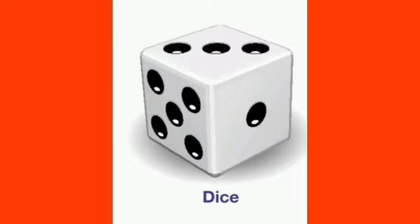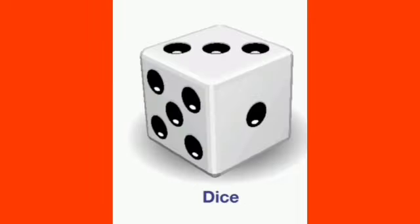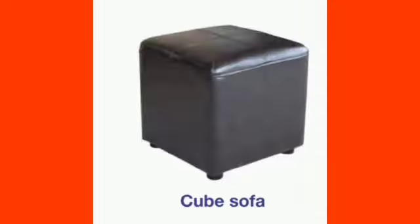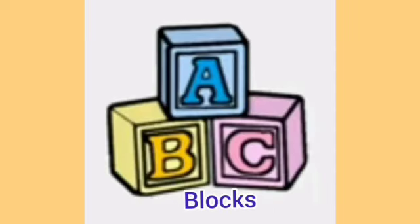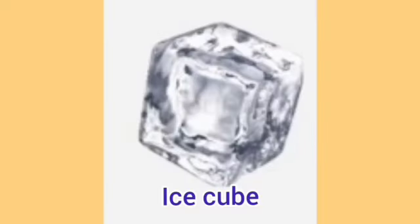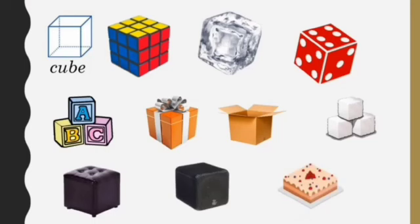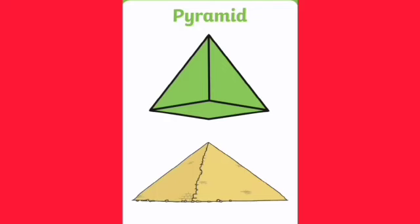Dice, that is used to play Ludo and Snakes and Ladders, also holds a cube shape. Some more examples are sugar cubes, blocks, and ice cubes. These are different examples of a cube.